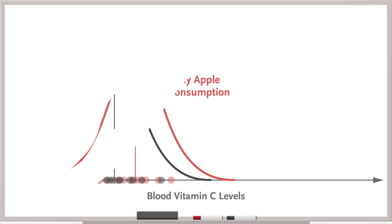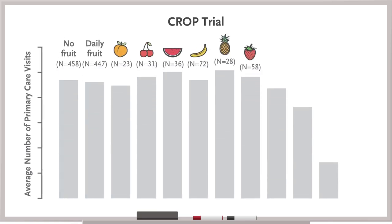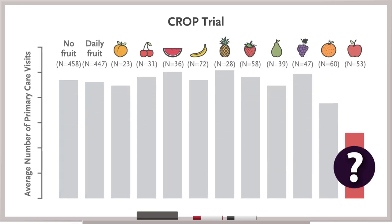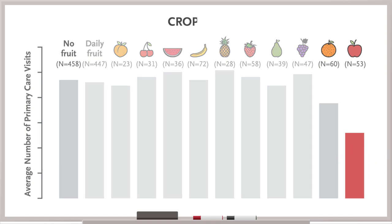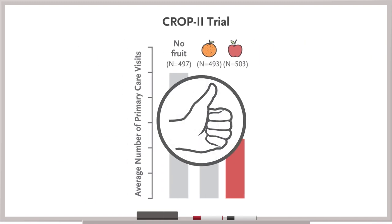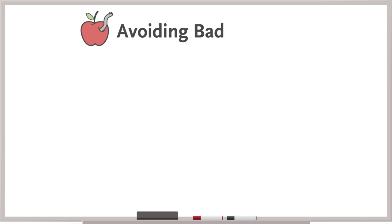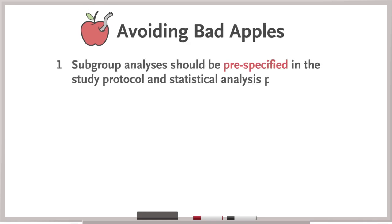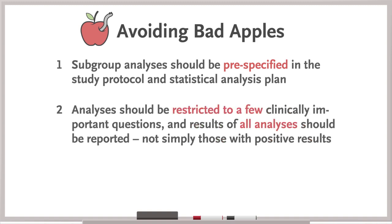So, is there ever a good reason to perform a subgroup analysis? Subgroup analyses can be useful for generating hypotheses if unexpected associations are detected that investigators want to explore in future studies. Being able to reproduce a finding from a subgroup analysis in a prospective trial is an important confirmation of validity. But there are some important rules to avoid the bad apples. Subgroup analyses should be pre-specified in the study protocol and statistical analysis plan. Analyses should be restricted to a few clinically important questions, and results of all analyses should be reported, not simply those with positive results.